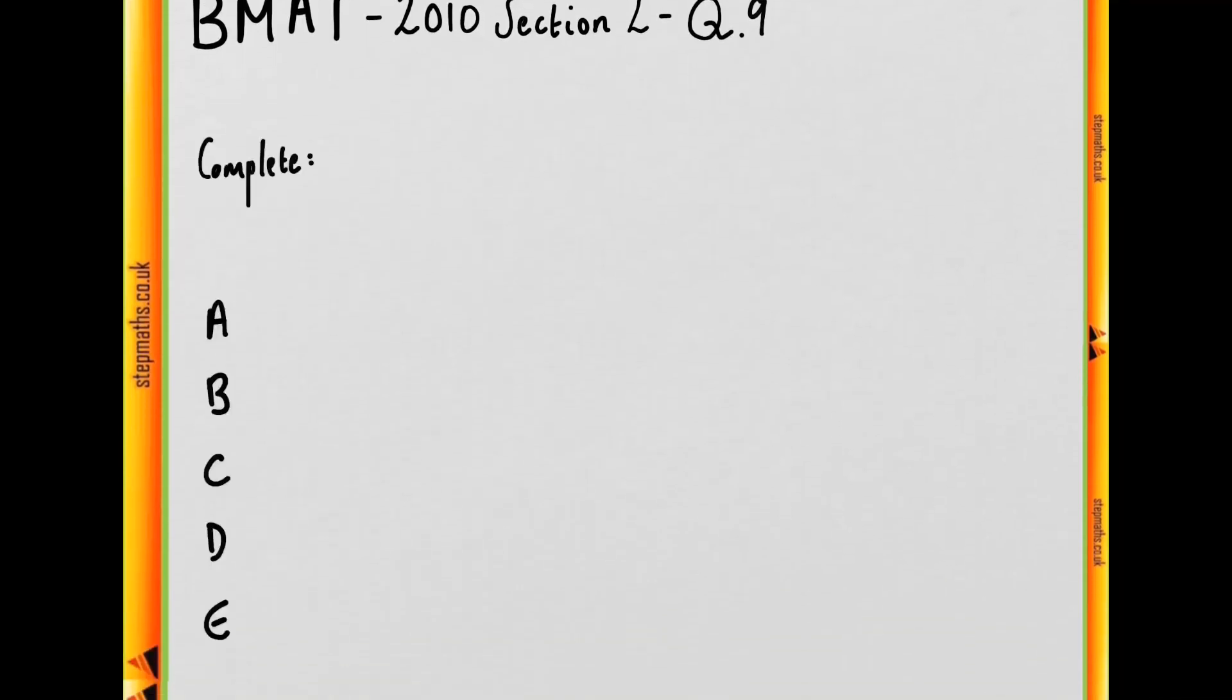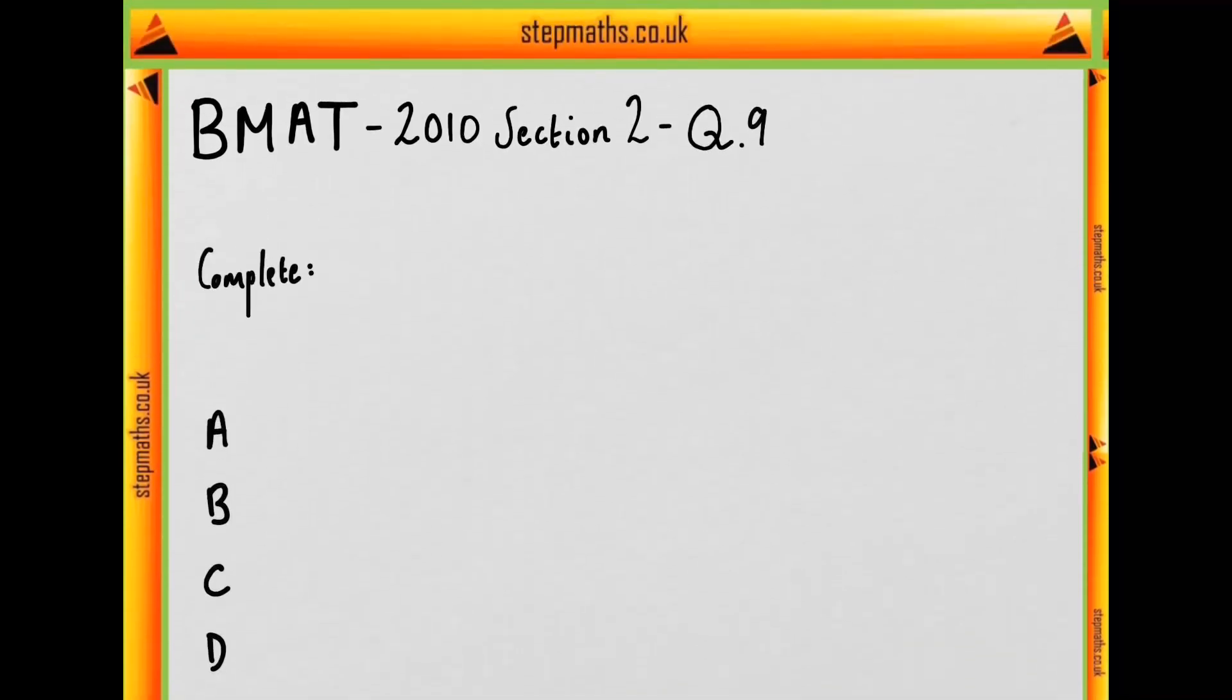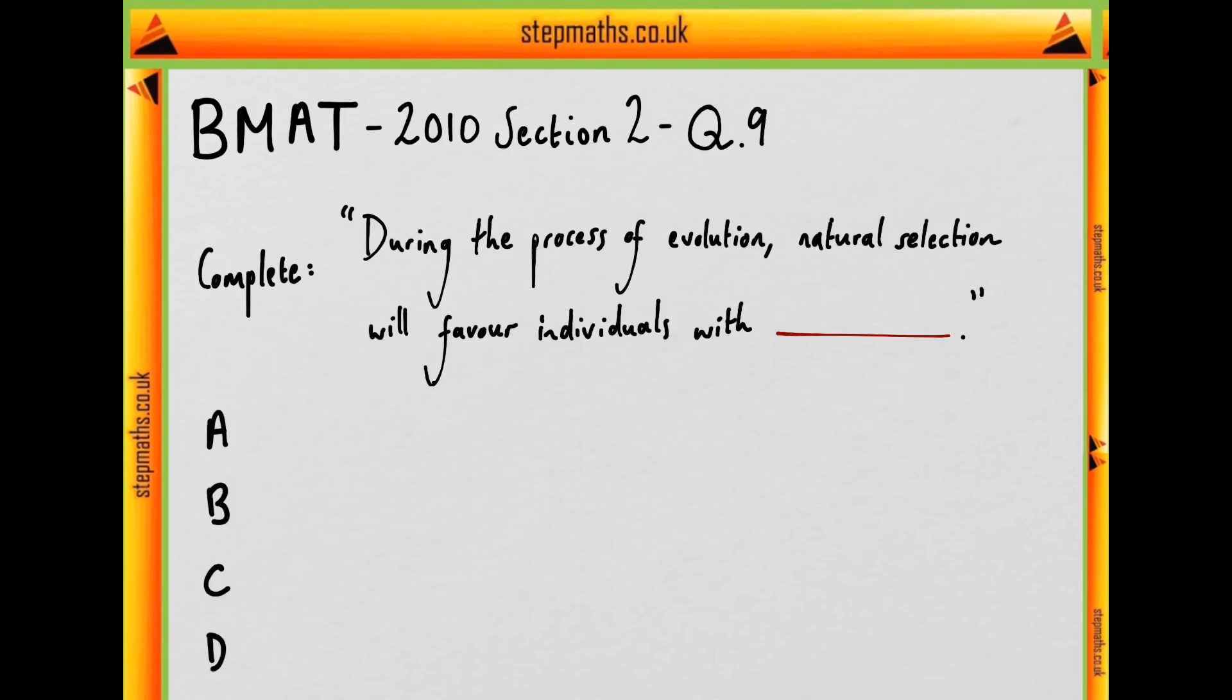In question 9, we have five options A through E, and we have to complete the following phrase: During the process of evolution, natural selection will favor individuals with blank.